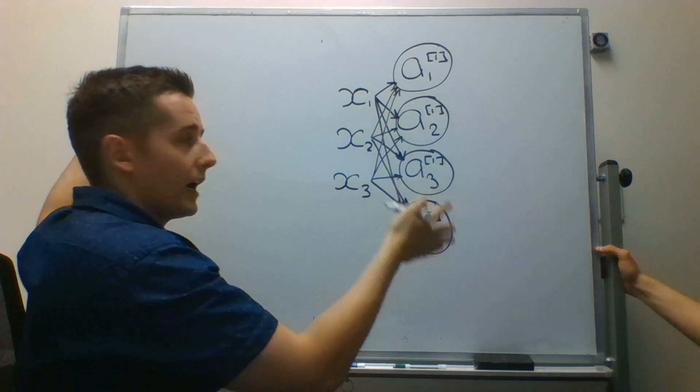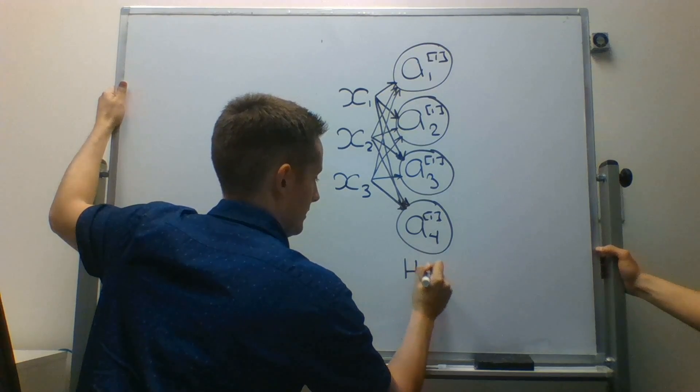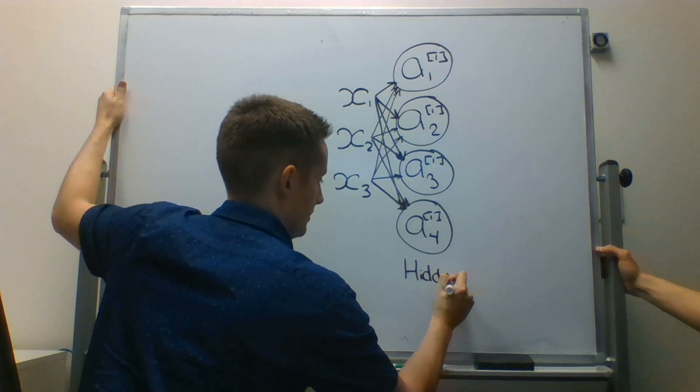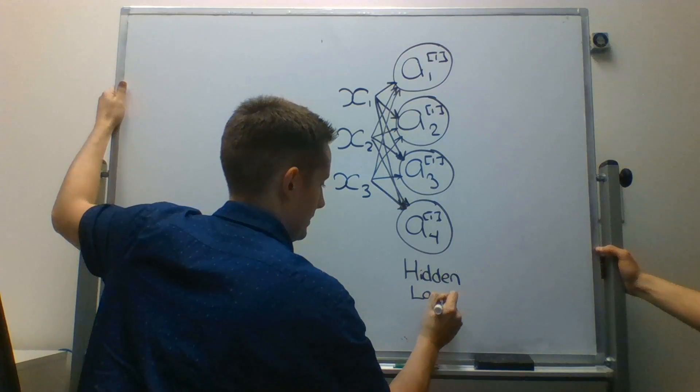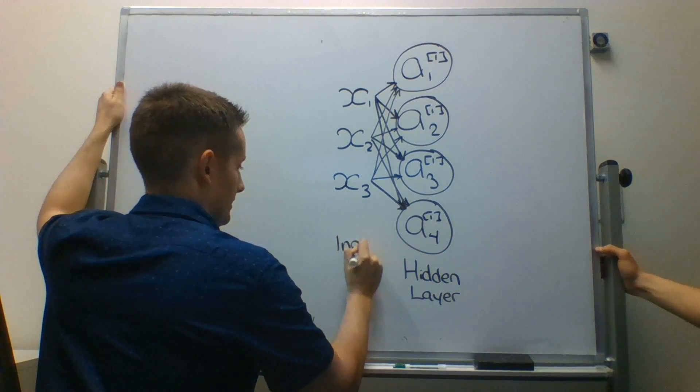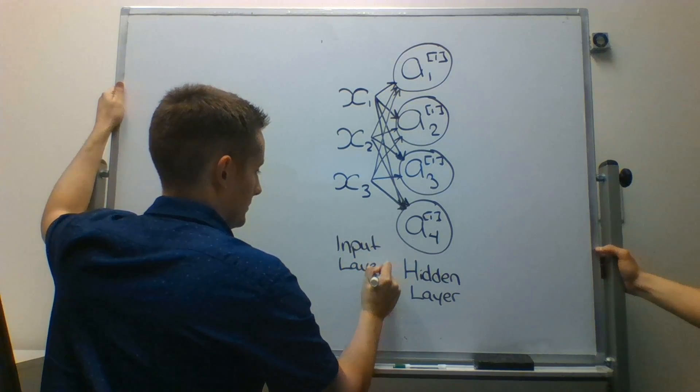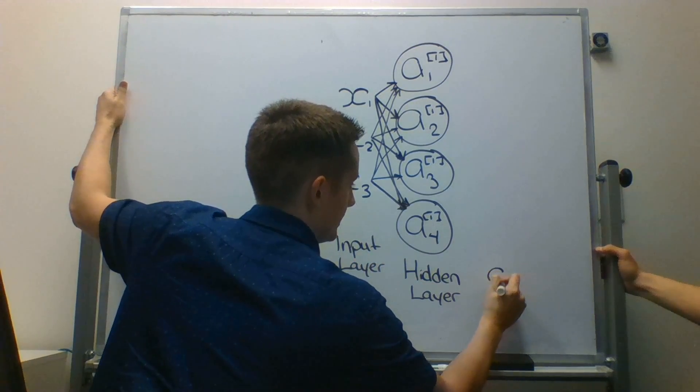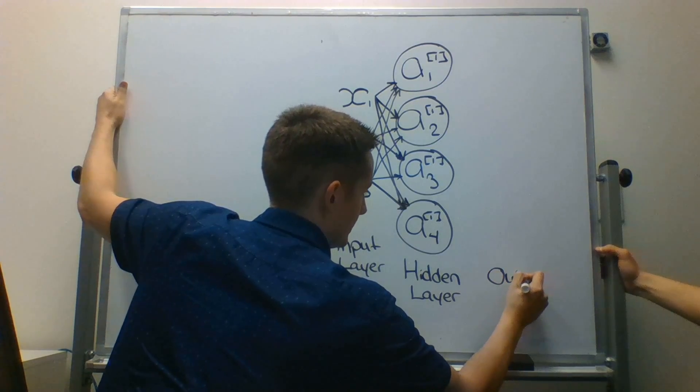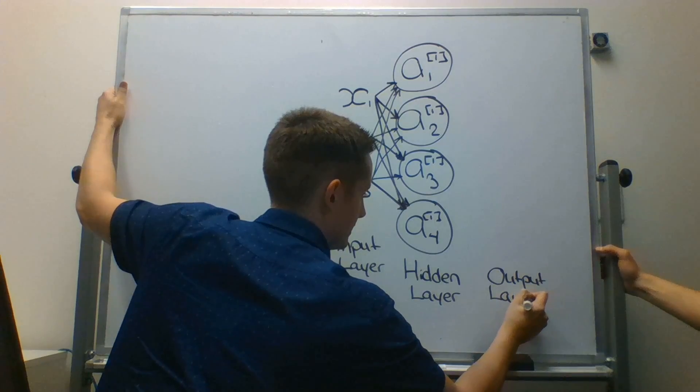And then we're going to have one output layer. So let's write hidden layer. And this is the input layer. This is the input layer, yes. And here we'll have an output layer. Hopefully we can still see that. Yes, we can.